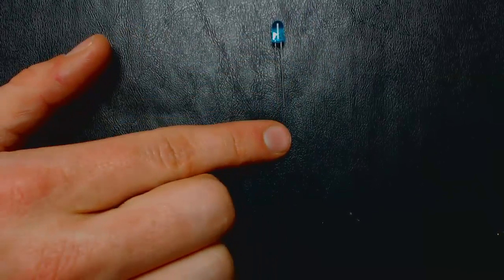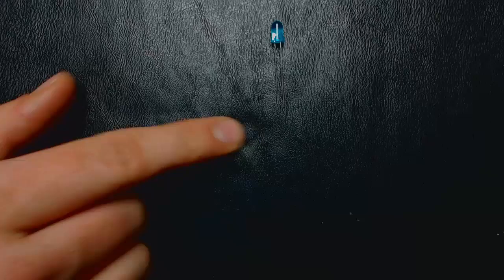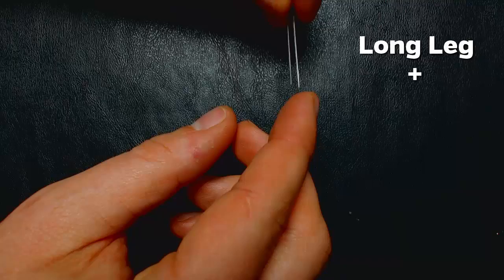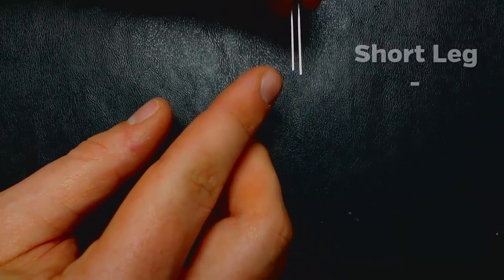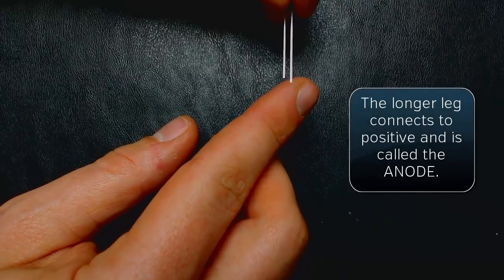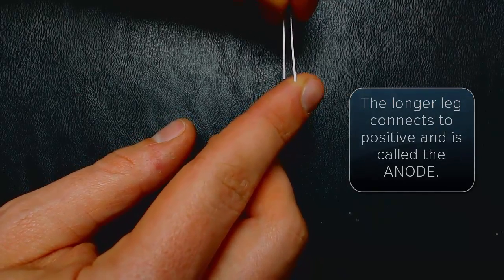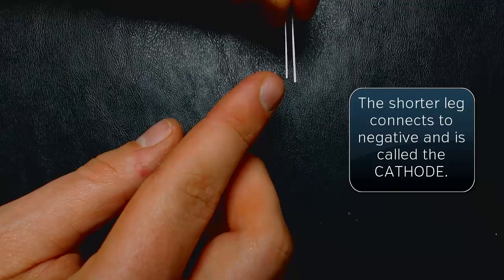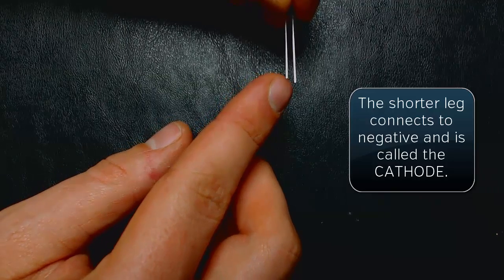That is, they have a positive side and a negative side. In this case, it's called the anode and the cathode. The longer leg connects to positive. The shorter leg connects to negative. The longer leg is called the anode. Again, that connects to positive. The shorter leg is the cathode and it connects to negative.